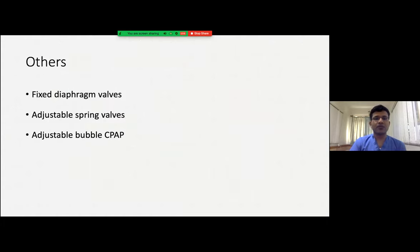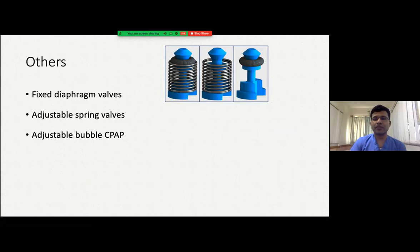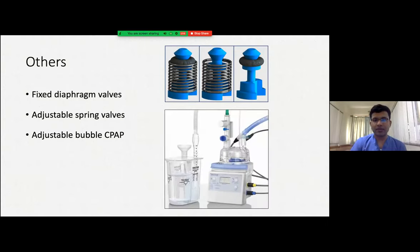There are other types of valves which can also provide PEEP: fixed diaphragm valves, which are the older version and seldom used nowadays, and adjustable spring valves. These can be seen in the PEEP valves of Ambu bags. We also have bubble CPAP, where pressure is regulated by the depth of insertion of the expiratory tubing into the water channel — the depth of insertion is equivalent to the PEEP.